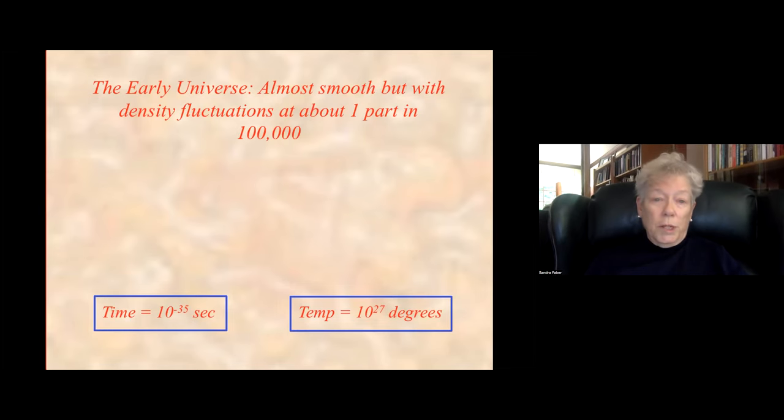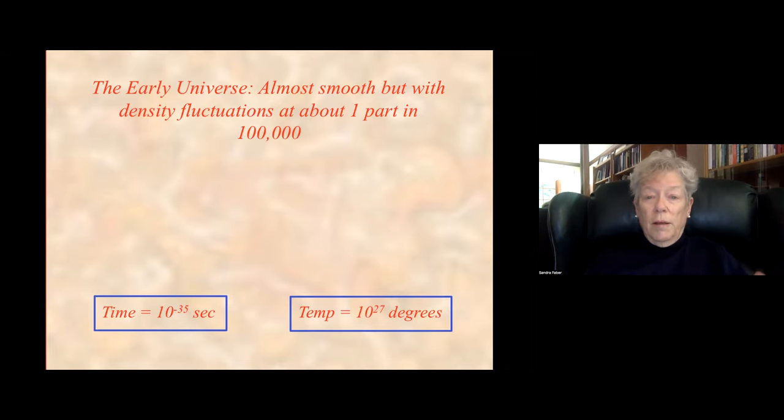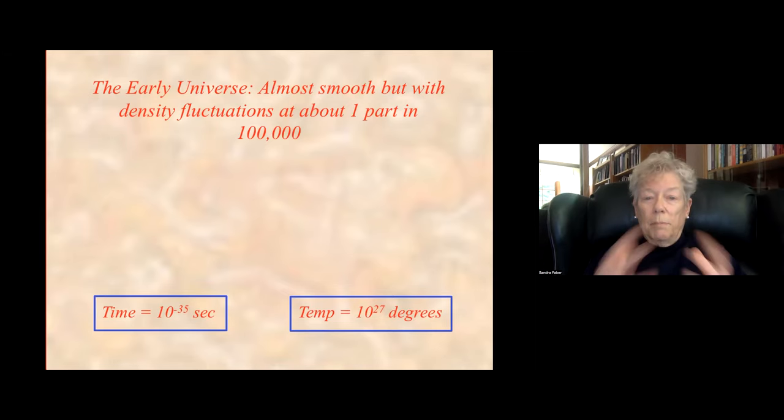So let's go back to a very early time, 10 to the minus 35 seconds, when the universe had a temperature of 10 to the 27 degrees Kelvin. Unbelievable that we can even speak about these things. And we know that the universe was very hot and very uniform at that time, except it was expanding faster than the speed of light.